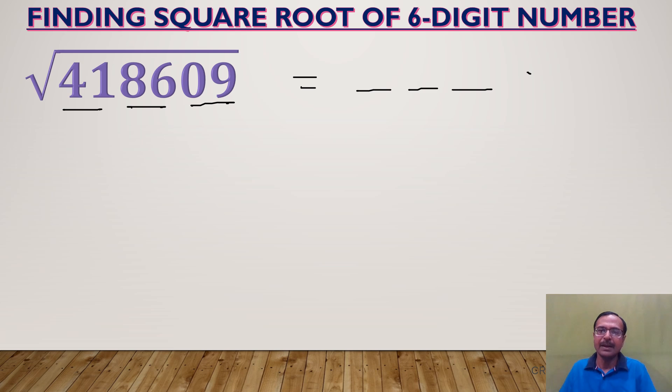But when we find square roots, we always have two possibilities. Look at the last pair, 09, ends with nine. Which single digit square ends with nine? 3 square is 9 and 7 square is 49, both end with nine. Therefore there are two possibilities at the unit place.